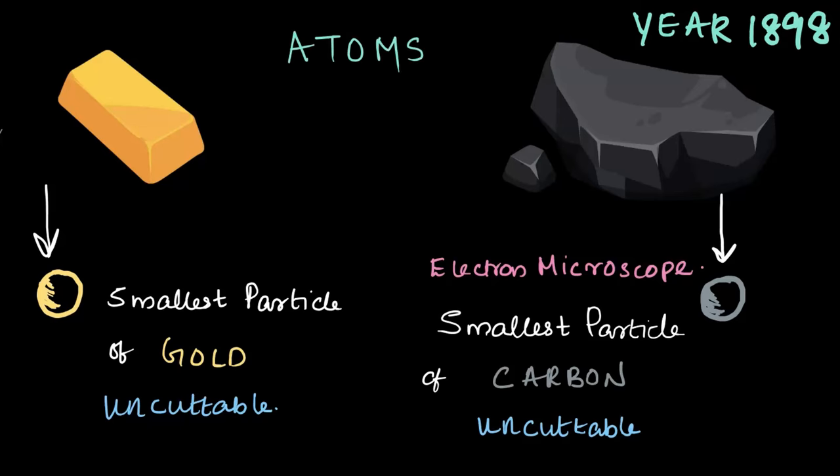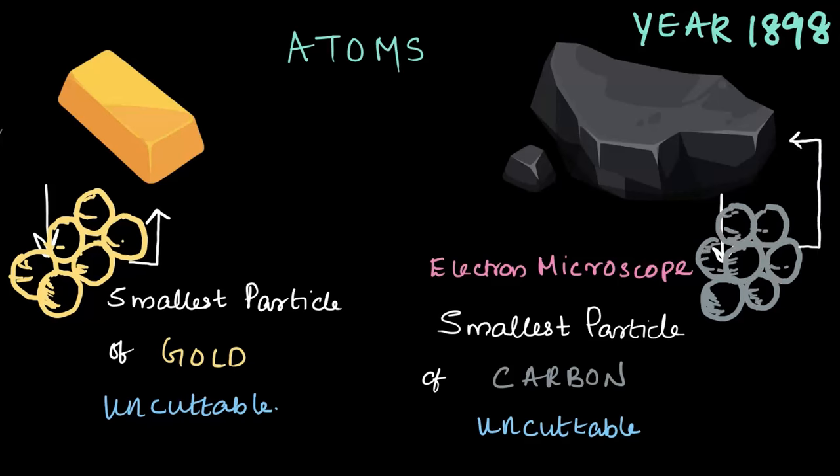Now if we think about it in reverse, these atoms, the smallest particles of matter, combine together to form objects we see. The gold bar holds countless gold atoms joined together. Similarly, graphite in your pencil is formed by many carbon atoms arranging themselves in a specific way.